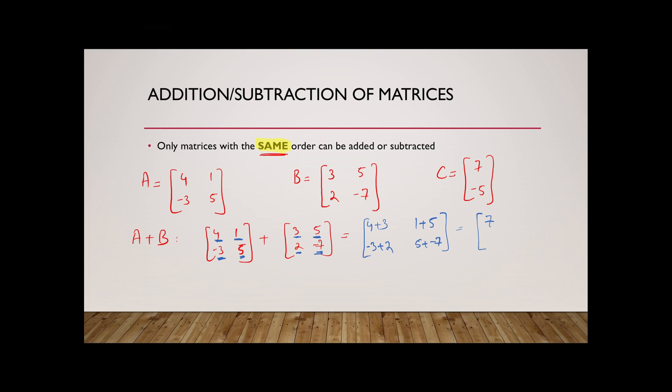Now let's add or perhaps subtract these elements. So 4 plus 3 is going to give me 7. 1 plus 5 is going to give me 6. Minus 3 plus 2, negative 1. 5 minus 7 is going to give me negative 2. So here's your final answer. Pretty simple, right?